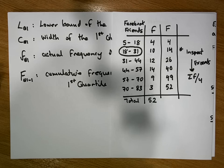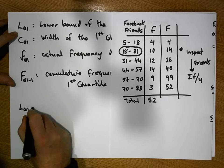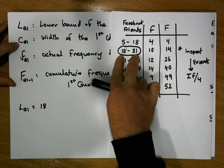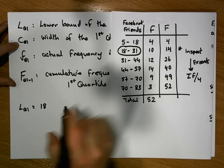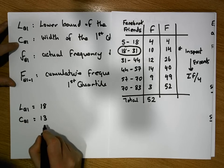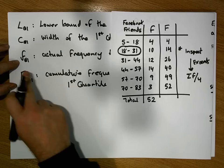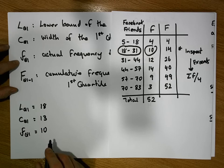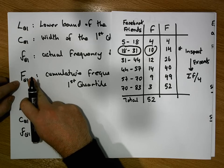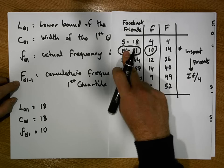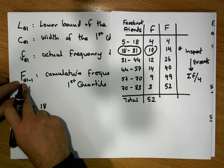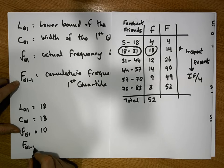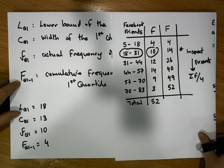Going back to our frequency distribution: L of Q₁ is the lower bound of the quartile class, so it equals 18. C of Q₁ is the width of the first quartile class, which is 13. Small f of Q₁ is the actual frequency of the first quartile class, which is 10. Capital F of Q₁ minus 1 is the cumulative frequency of the class before the quartile class — that's 4, not 14.